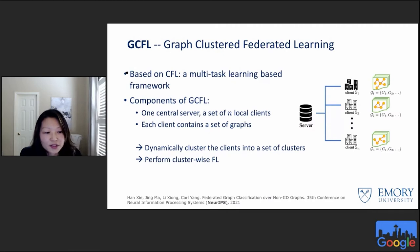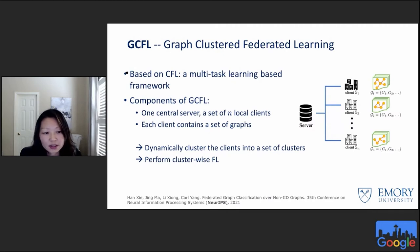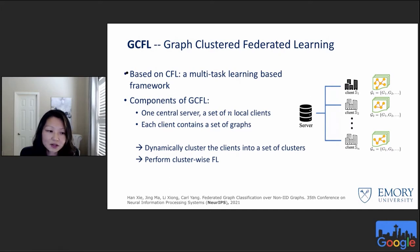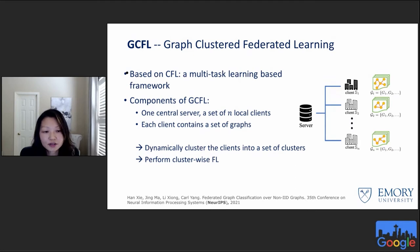The approach is based on CFL — clustered federated learning — a multi-pass learning-based framework. Each client holds a set of graphs and submits gradients for graph neural networks. The basic idea is to cluster the clients into a set of clusters based on their model updates, then perform cluster-wise federated learning. We theoretically show that model updates or gradients can capture feature and structure heterogeneity, and that clustering can reduce this heterogeneity.